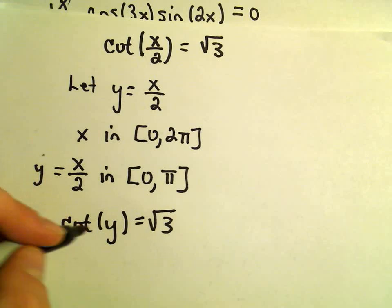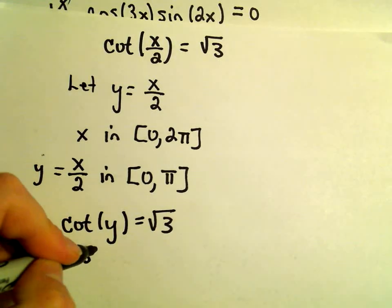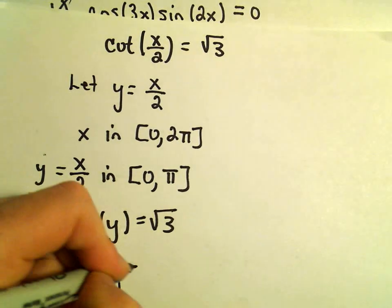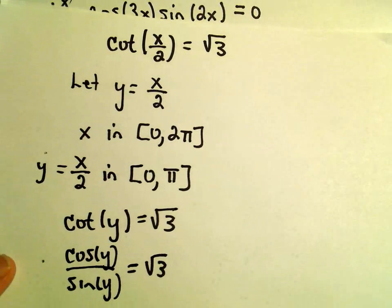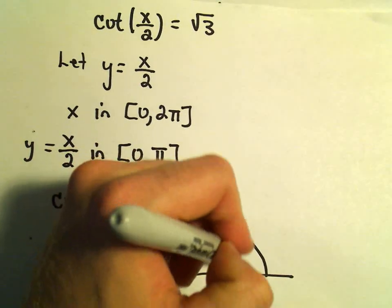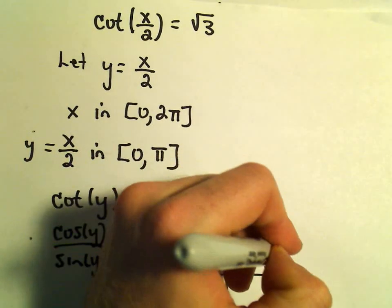Well, let's see. So what is cotangent? That's cosine over sine. And I just kind of go back and think about unit circle stuff.